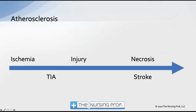Ischemic strokes occur because of the atherosclerotic process. As with acute coronary syndrome, we go through ischemia, injury, and necrosis. When blood flow decreases to an area of the brain, ischemia occurs first — not enough oxygenation — and the tissue stops working properly. If we reapply oxygen to that cell, it will likely recover. However, prolonged lack of oxygen causes so much damage inside the cell that it will burst, leading to injury. If only a few brain cells are affected it may not matter, but if it's millions, the patient will have significant symptoms.